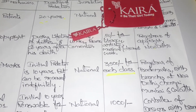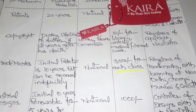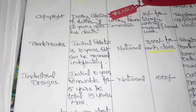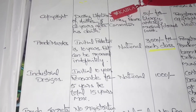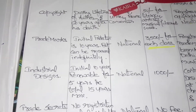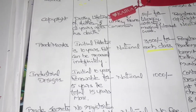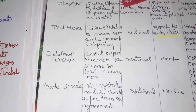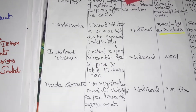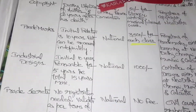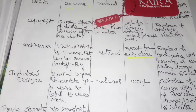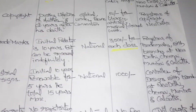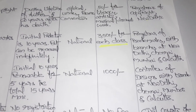For industrial design, the initial protection is 10 years. It can be renewed for an additional 5 years, giving a maximum total protection of 15 years — not a lifetime. The fee for industrial design registration is 1,000 rupees.